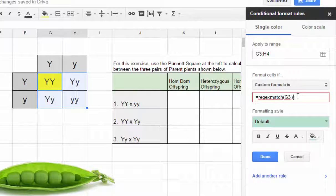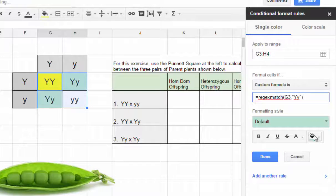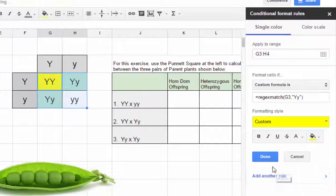Back to our formula, we open our quotation marks and we tell it we are looking for big Y little y, close quotation marks, close parentheses, and we'll choose our fill color as yellow because again big Y little y will be yellow and we hit done.